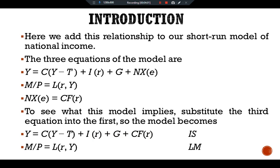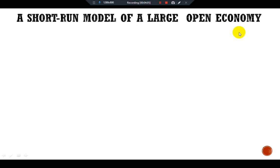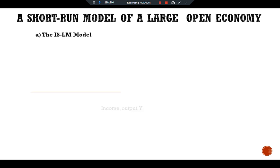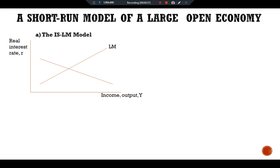For the graphical presentation of the short-run model of a large open economy, we have three panels. The first panel is the IS-LM model, with income/output Y on the x-axis and real interest rate r on the y-axis. We have an upward-sloping LM curve and a downward-sloping IS curve. The intersection of IS and LM determines the national income Y1 and real interest rate r1 in the economy.